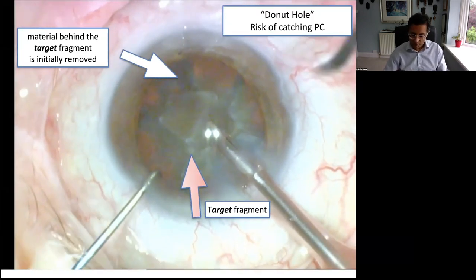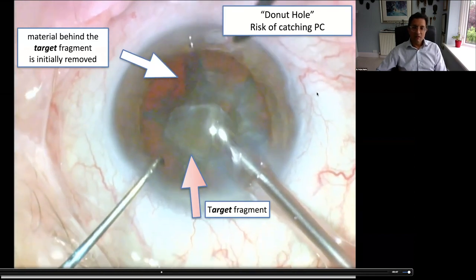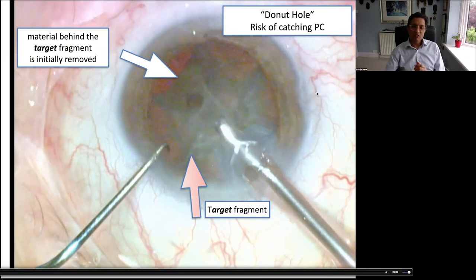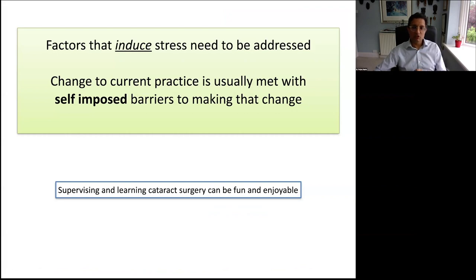Material behind the target fragment is being removed because the hole in the fragment allows aspiration to go through it — putting the patient at risk of a PC tear. That's purely because the trainee is too heavy-handed with their foot control. We see this time and time again. Every stage of the operation has clinical signs, and we can't assume the trainee recognises them — whereas the expert trainer knows and can work out what's going on. We need to point out clinical signs as we go.